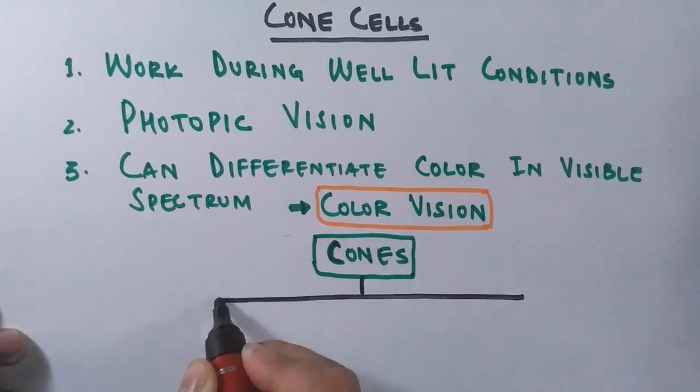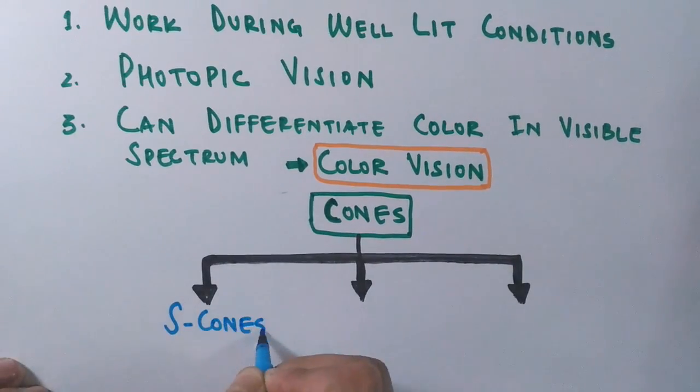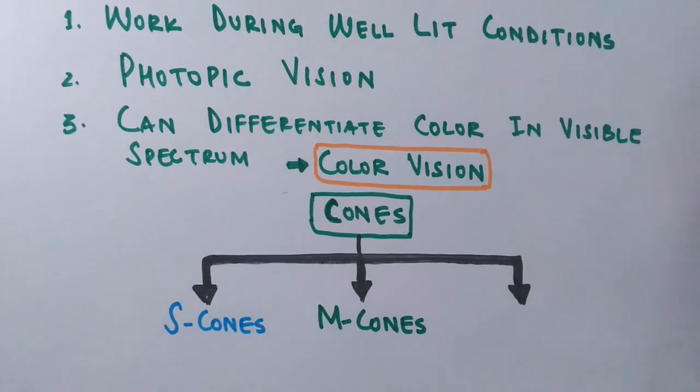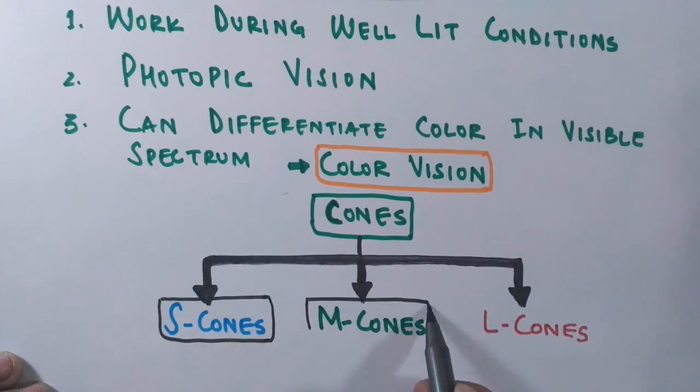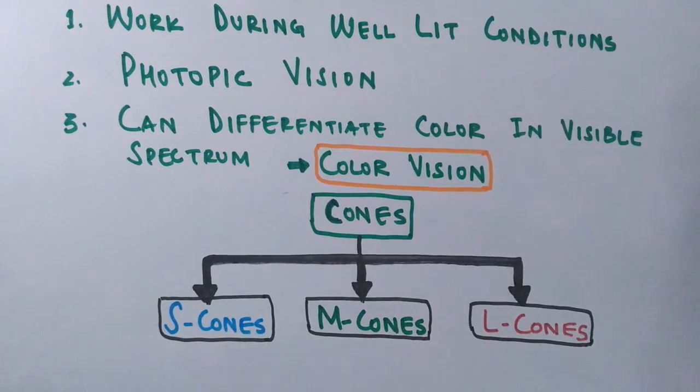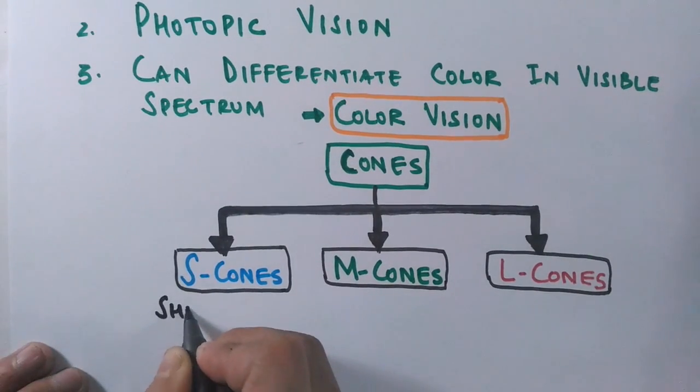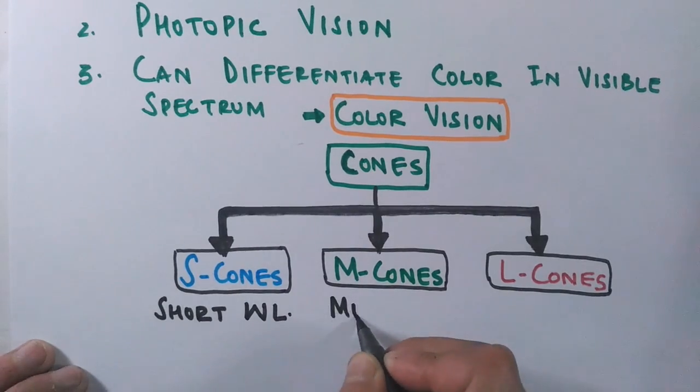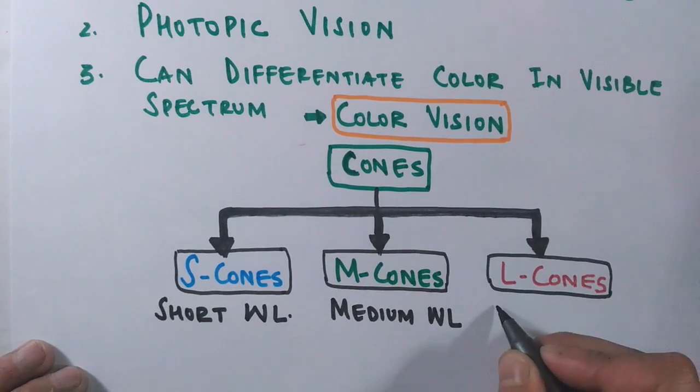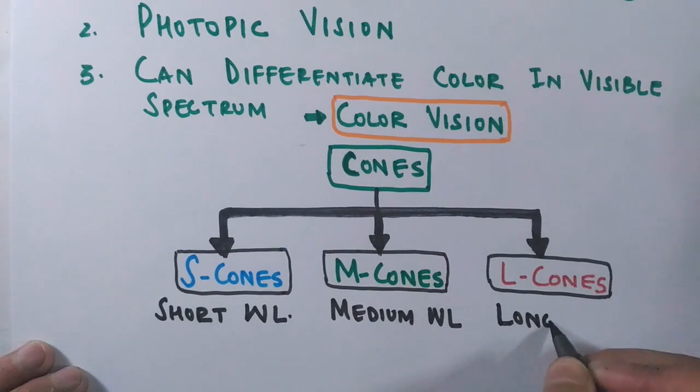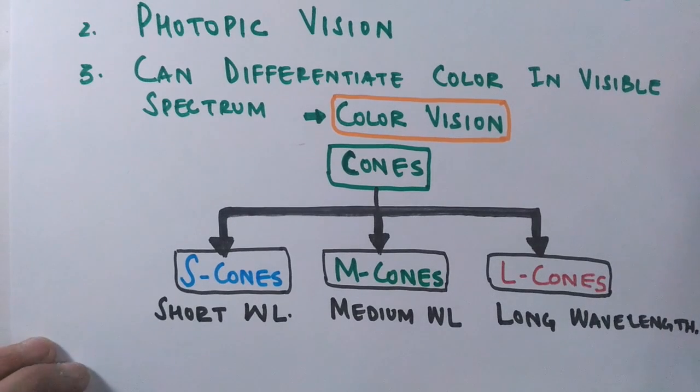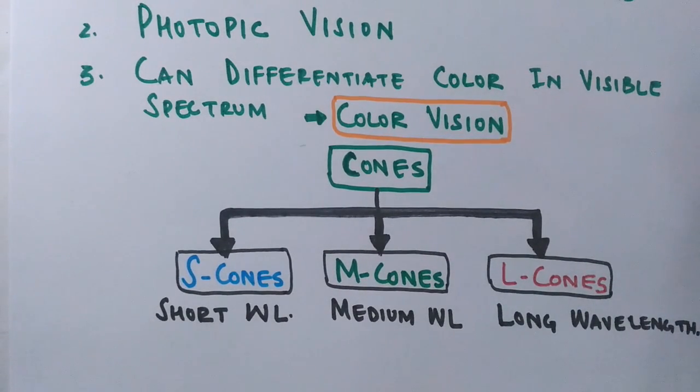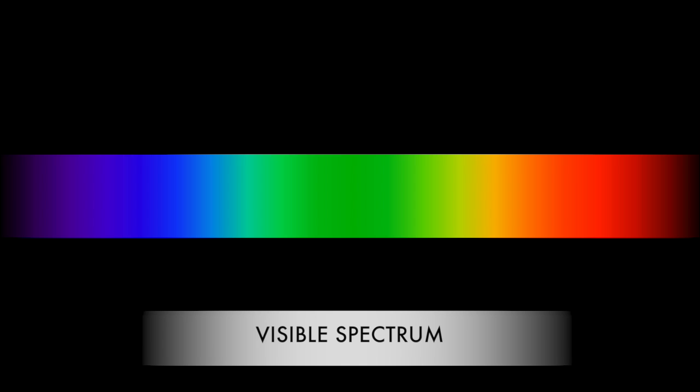These cones are of three types: S-type cones, M-type cones, and L-type cones. S denotes the short wavelength of visible spectrum, M denotes the medium wavelength, and L cones receive the long wavelength of visible spectrum. If we see the visible spectrum, as you can see in this diagram, it has different colors: violet, indigo, blue, green, yellow, orange, red, that comes to be VIBGYOR.